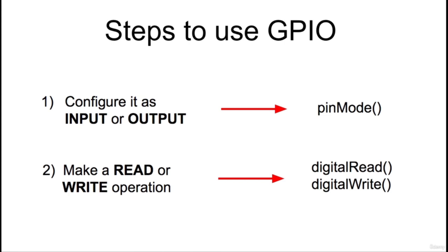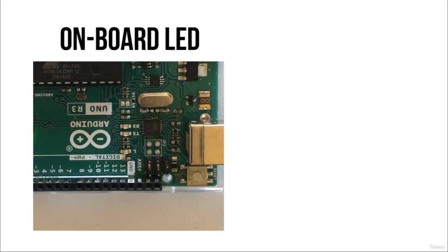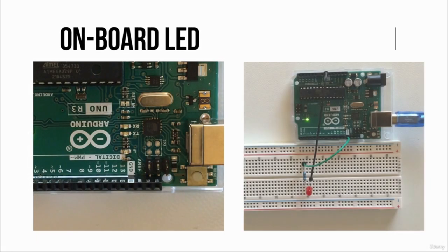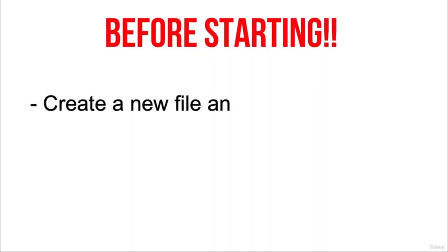These are all the fundamentals needed to understand what a digital pin is and how to use it. We can now proceed with some practical exercises. Hi, and welcome to this second exercise. In this exercise, we are going to use a digital pin to blink a simple LED light. We will first use the LED embedded on the Arduino board and then drive an external LED. Let's start by creating a new sketch and saving it as Blinky.